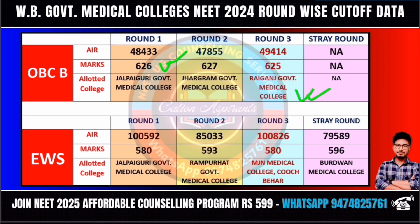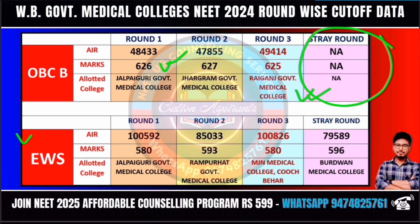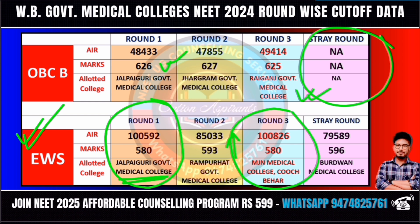Round 3 allotted college: Raiganj Government Medical College, cut-off mark 625 marks. Stray Vacancy Round counseling is for OBC-B category candidate. EWS category: Round 1 is 580 marks, cut-off rank is 1,592. Round 2 and Round 3 allotted colleges are also listed. NJN Medical College is the allotted college in Round 3 cut-off. Round 1 allotted college and Stray Vacancy Round counseling are also included.